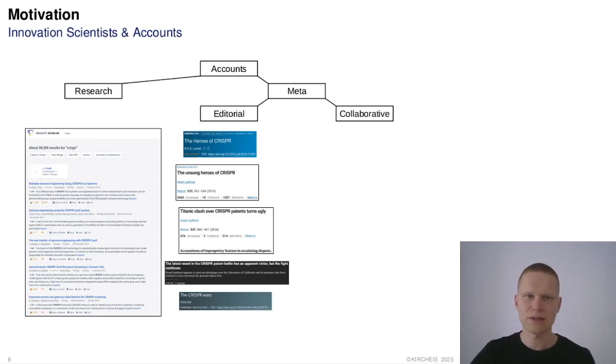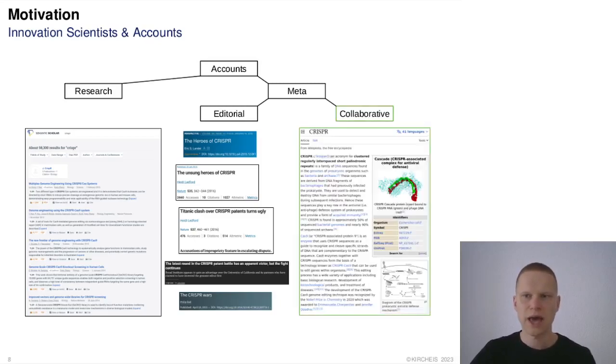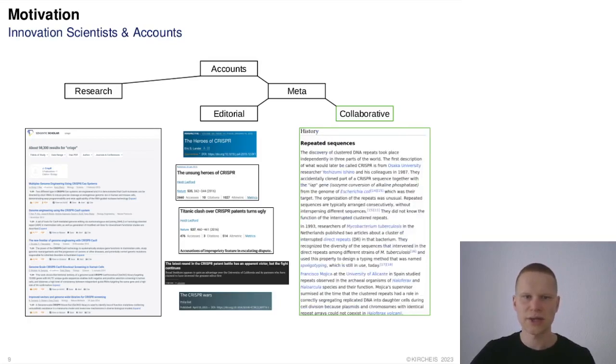Collaborative accounts like Wikipedia articles have so far been largely overlooked, particularly history sections in Wikipedia articles on science and technology.